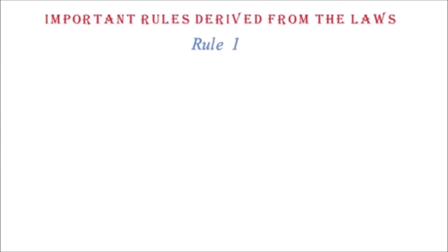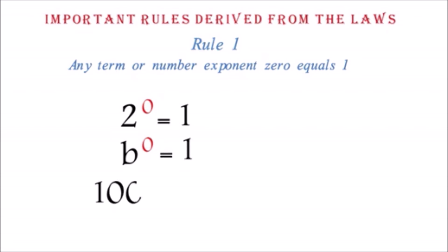Rule 1: Any term or number exponent 0 equals 1. Example: 2 exponent 0 equals 1. B exponent 0 equals 1. 100 exponent 0 equals 1. This is straightforward. We've already seen this in Lesson 1.